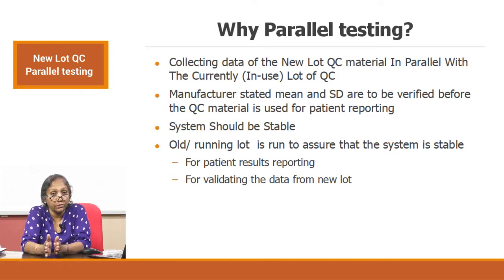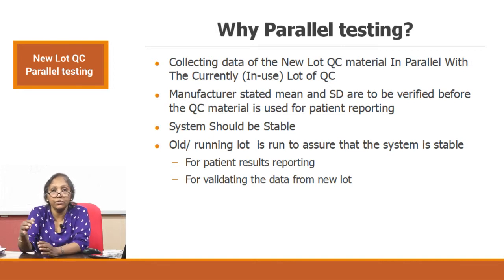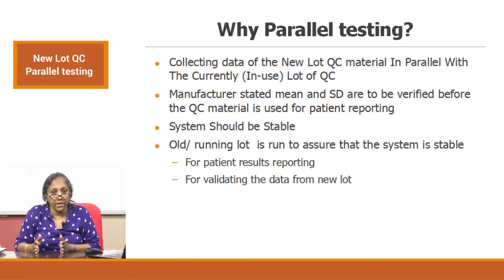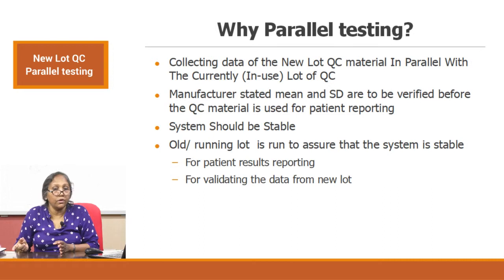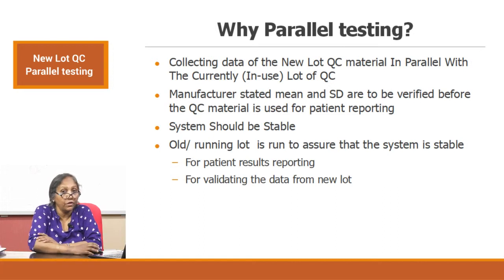You hold your analytical system steady, and to monitor it you use the old QC lot. You use that stable analytical system to evaluate your new QC lot. There are three things at play: old QC evaluates your analytical system, and that analytical system is in turn used to evaluate your new QC lot. There is a parallel process going, therefore it is called parallel testing of quality control.